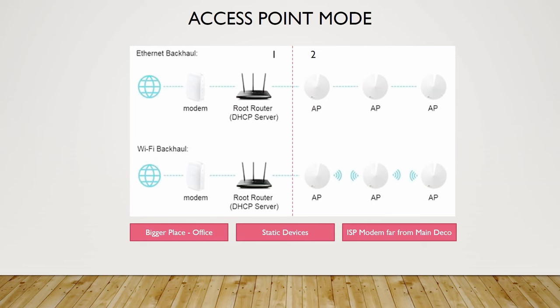The devices should also be static - there should not be too much movement, because if a device moves from one compartment to the other the handoff won't be seamless and you'll see a lot of drop-offs. So this is pretty much the distinction between router mode and access point mode. Going ahead, I've also done some testing and I'll share the results.